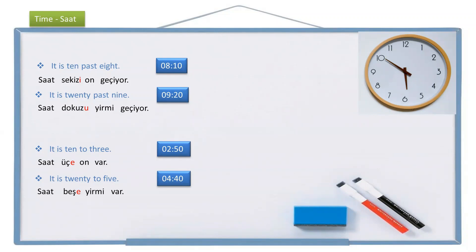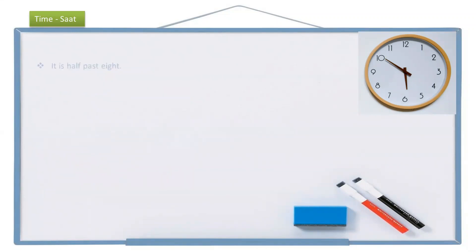Now let's see the halves and the quarters. The sentence is: it is half past eight. In Turkish, we say it as 'it is eight and a half.' How do we say it? The time is — saat, eight — sekiz, half — buçuk. Half is buçuk in Turkish in the context of time. So it is half past eight: saat sekiz buçuk.